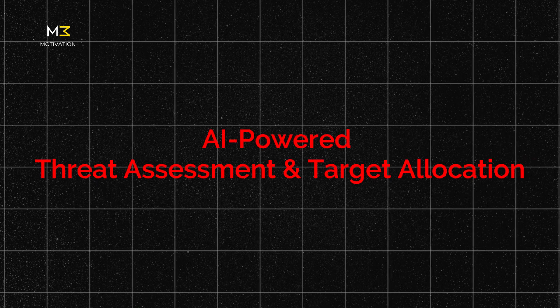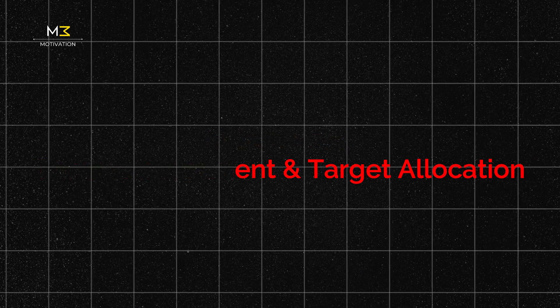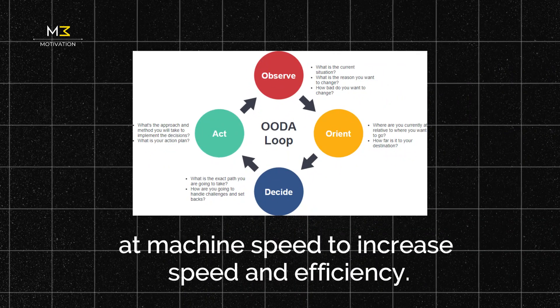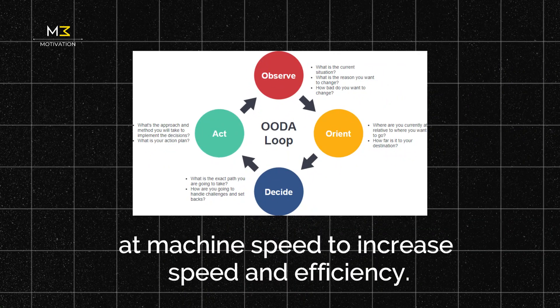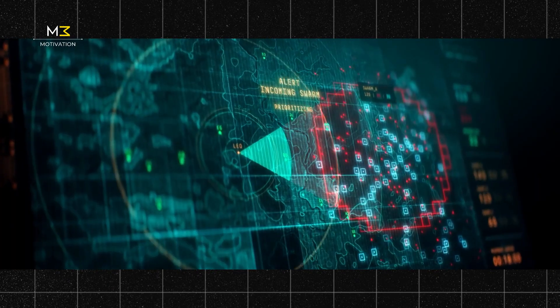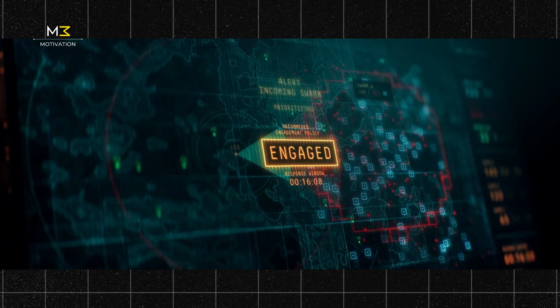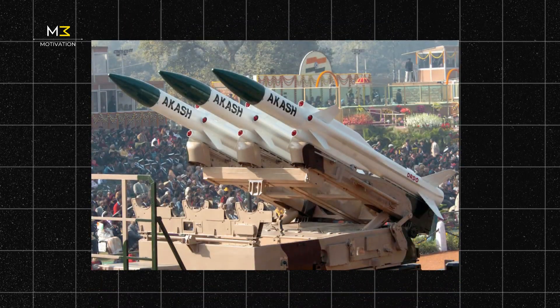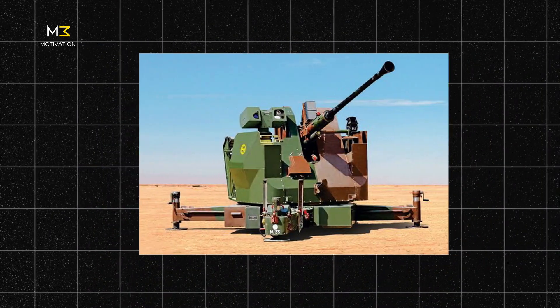AI-powered threat assessment and target allocation: Akash TIR follows the OODA loop at machine speed. When a threat is detected, its AI evaluates the object's speed, size, altitude, and trajectory, along with the type and priority of the target — for example, a missile heading for a city versus one in a remote area. It then selects the most efficient weapon to counter it based on availability, cost, and other factors.